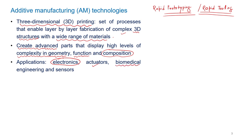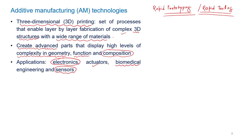Biomedical engineering is the biggest beneficiary of additive manufacturing because there is no limitation on the complexity of part shapes. When dealing with implants to be inserted in the body, we must match the geometry of body parts and bones, which have free-form complex surfaces. Traditional manufacturing makes it very difficult to generate such complex surfaces, whereas 3D printing makes it very easy and fast. Sensors can also be manufactured using additive manufacturing techniques.